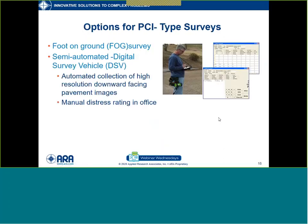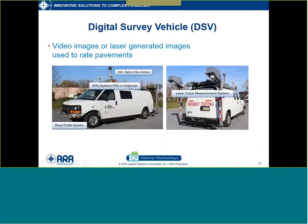How would you do a PCI survey? There are a few methods, starting with the most simple — foot on ground, literally walking the pavement, taking a tablet or clipboard and documenting the distresses you see. This isn't always feasible for larger projects. So another method is the semi-automated digital survey vehicle. This was a tool developed for network level pavement management but can be very useful for project level as well. In an automated way, it's collecting high resolution images that are then evaluated in the office.